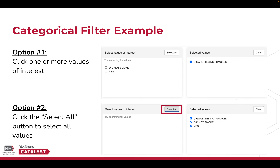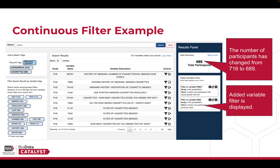We can see that this is a categorical filter because the values are returned in text form. For categorical filters, there are two options for applying a filter: we can either click the checkboxes next to the values we are interested in, or we can click the Select All button to automatically select all values. In this example, we want to select all. We have applied the filter to the variable and the number of participants has changed from 716 to 689. The filter summary now shows both the continuous and categorical filters.